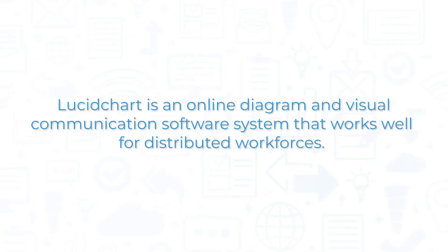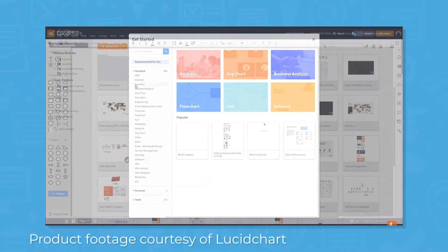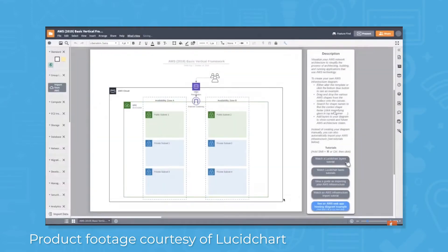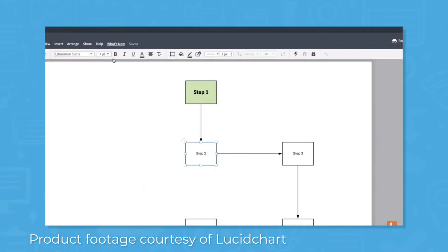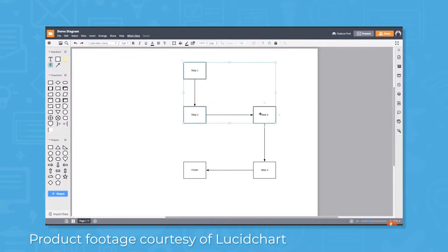Lucidchart is an online diagram and visual communication software system that works well for distributed workforces. The system offers a shared workspace with easy-to-use drawing tools for a wide variety of use cases. You can create network diagrams, organizational charts, process flow charts, technical designs, timelines, and more.